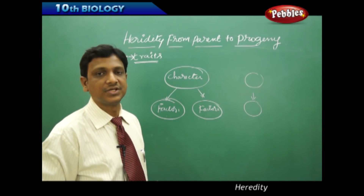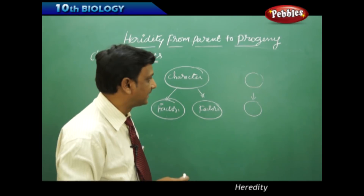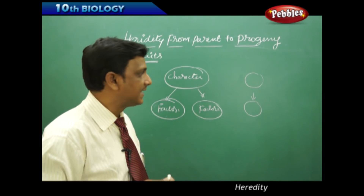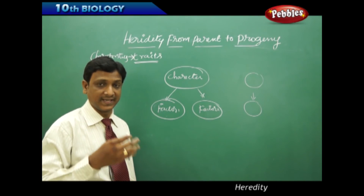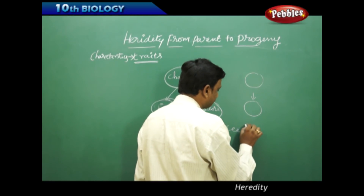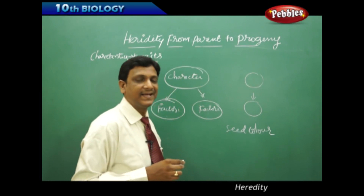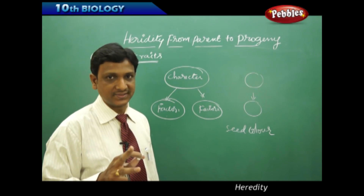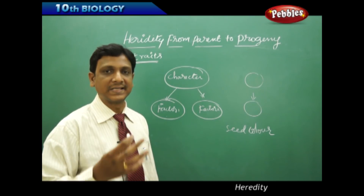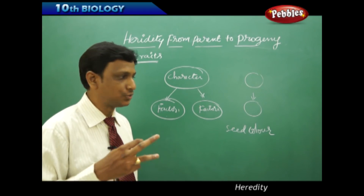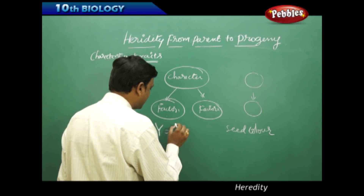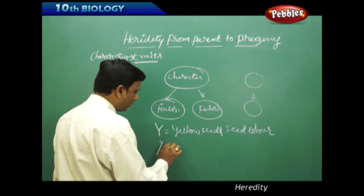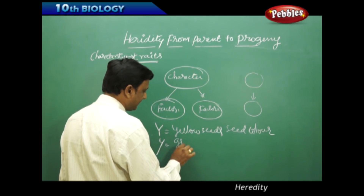The traits are carried by the seeds from one generation to another generation. For that, he conducted experiments on pea plants to see the number of generations. For his experiments, he selected pea plants with a contrasting character — the character he selected was seed color. Certain seeds are green, certain seeds are yellow. He took two pure breeds with contrasting characters. Y stands for yellow seeds and small y stands for green seeds.